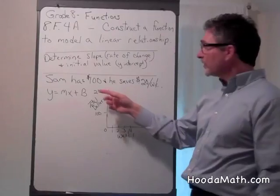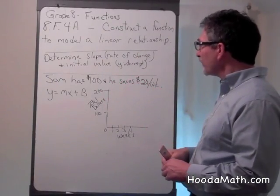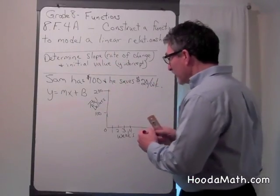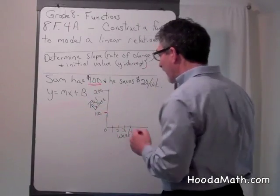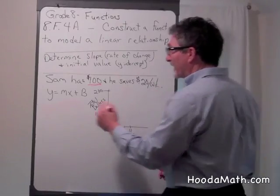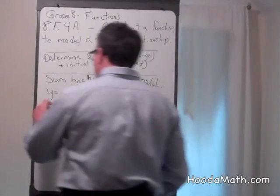Sam has $100 and he saves $20 per week. His initial value or his y-intercept is $100. This is what he started out with. Every week he adds $20 more. That is his slope or rate of change.